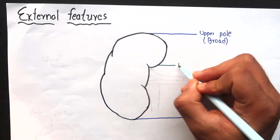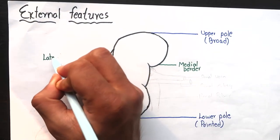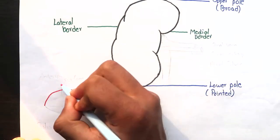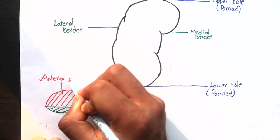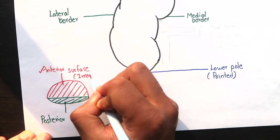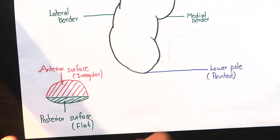There are two borders, the medial border which is concave and the lateral border is convex. Each kidney has two surfaces, anterior and posterior surface as I've outlined them down here. Anterior surface is said to be irregular and the posterior surface flat. But it is often difficult to recognize the anterior and posterior aspects of the kidney just by looking at the surfaces.